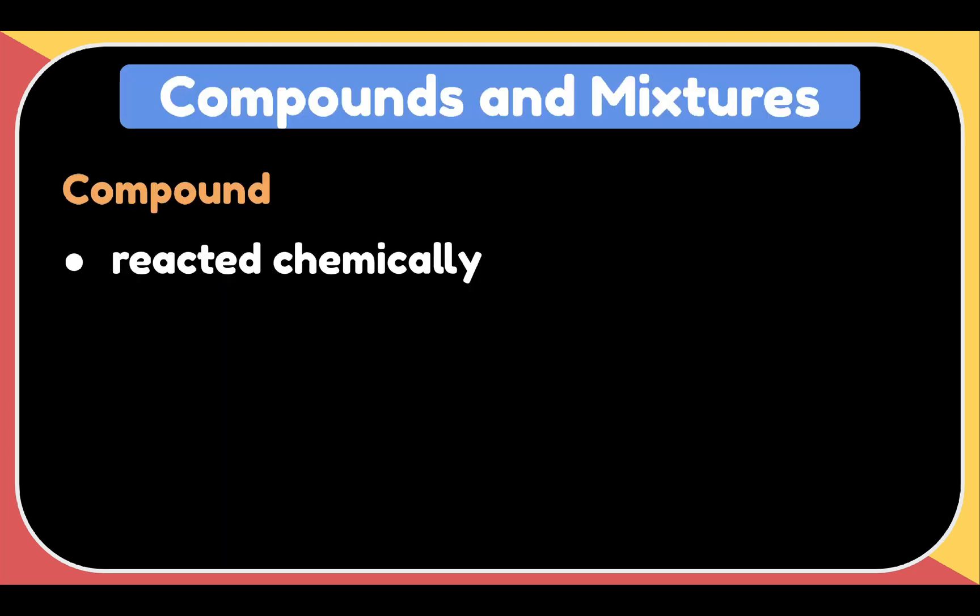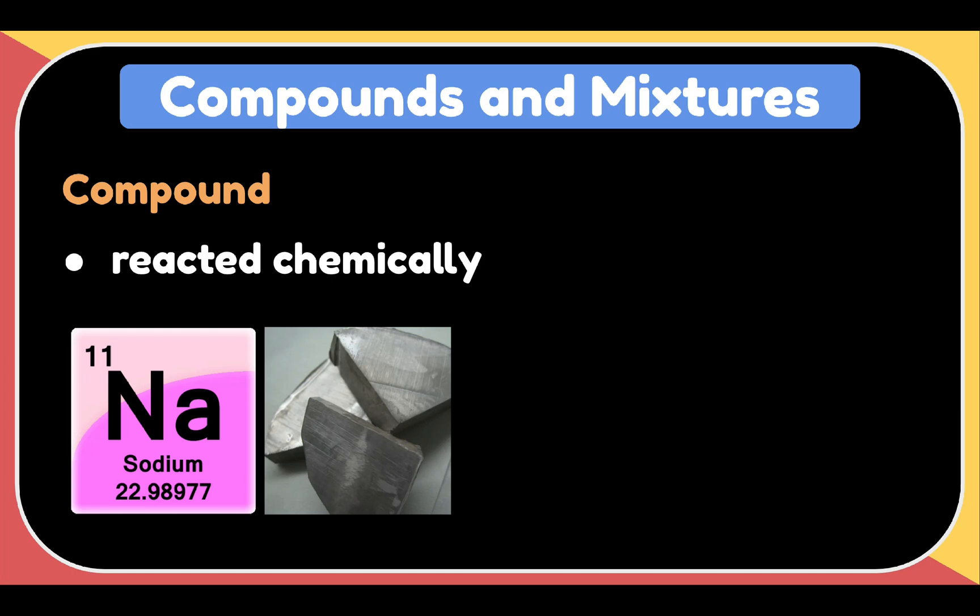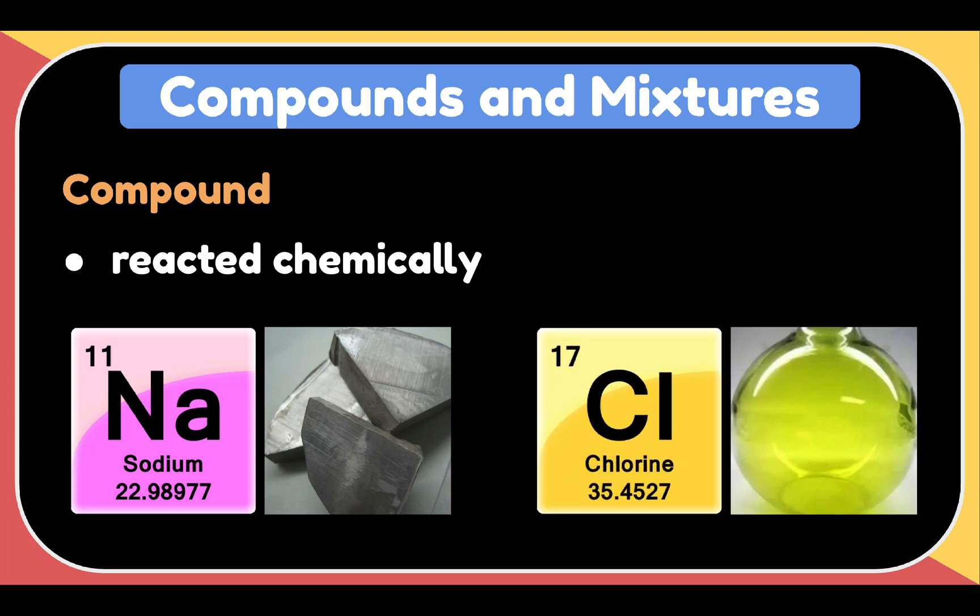Now, let's go to compounds and mixtures. You have to remember that a compound is reacted chemically, meaning that each of its individual parts no longer retain their own properties. For example, sodium, or Na, is a highly reactive silverish metal. We also have chlorine, which is a toxic yellow-green gas at room temperature.